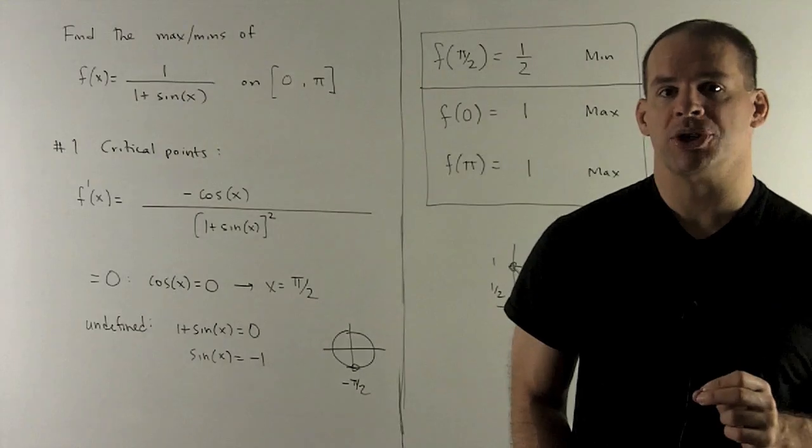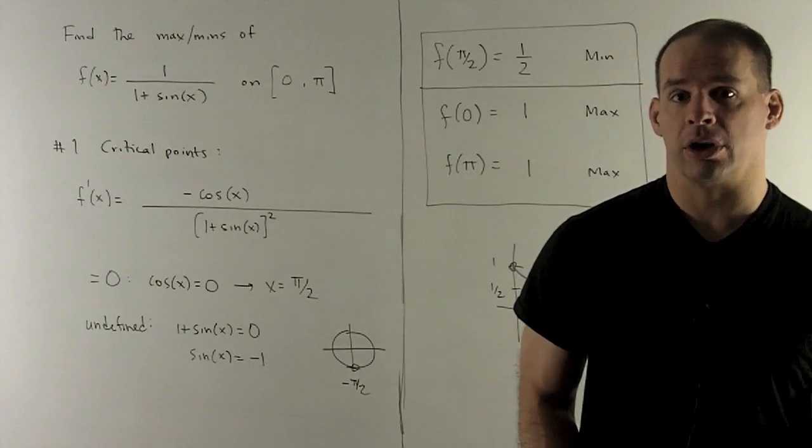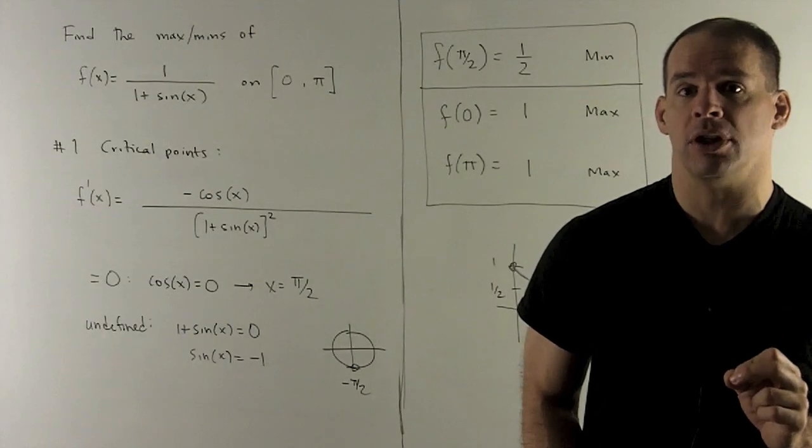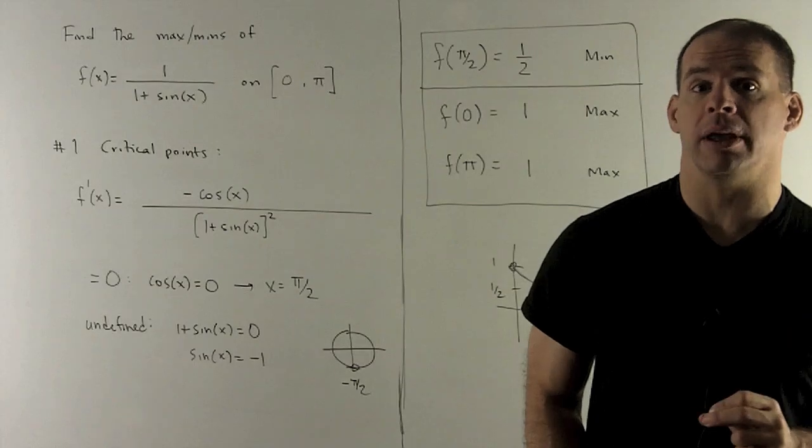As usual, we proceed by taking the derivative, looking for the critical points, then we're going to take the critical points and the endpoints of our interval, evaluate f on those, and then compare to find the max and the min.